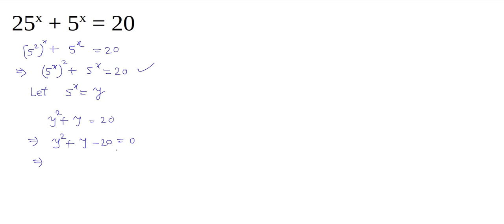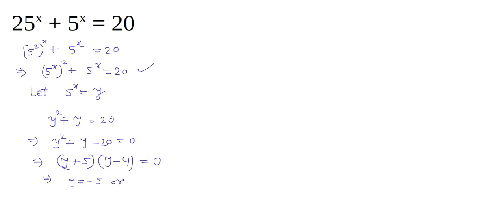You can factorize it — it is a simple quadratic equation — and you can factorize it as (y + 5)(y − 4) = 0. So the two factors give y = −5 and y = +4 as the solutions of this equation.